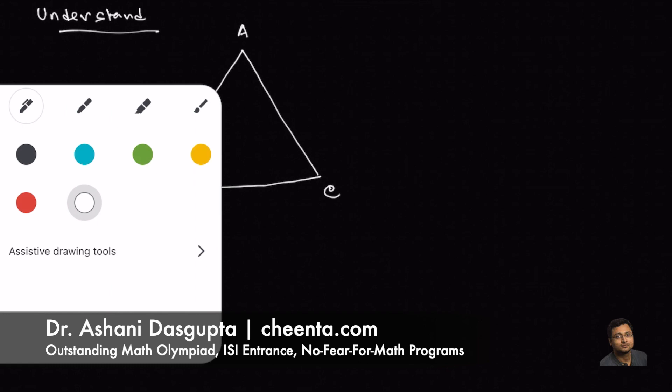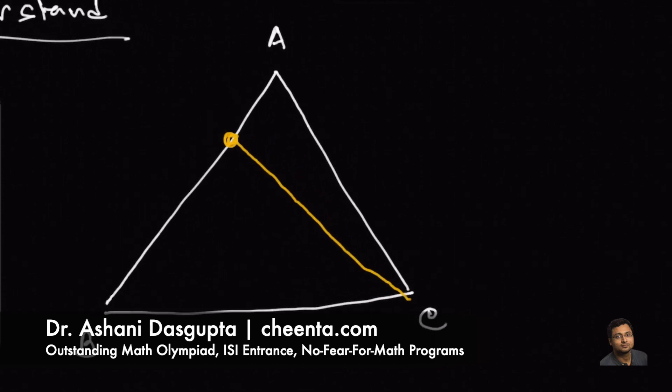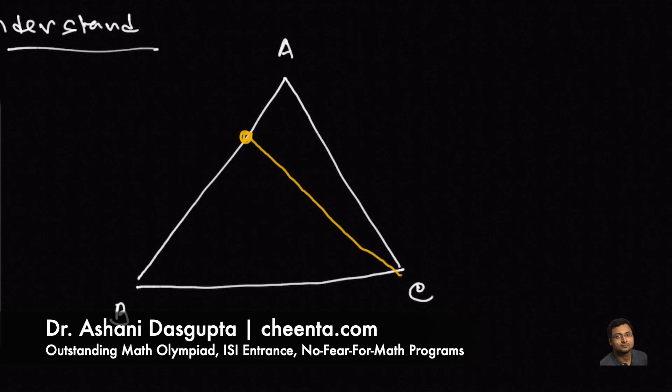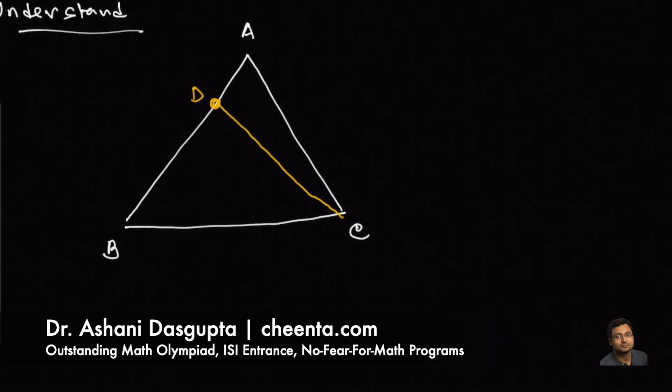And from the point C, we drop a perpendicular on AB. Let's call this perpendicular CD. CD is perpendicular to AB.